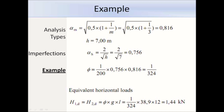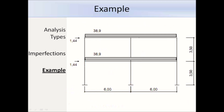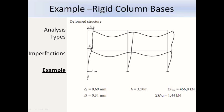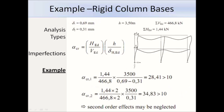We have worked out the EHFs as 1.44 kN and we can add those to the diagram. For the case of rigid column bases, the deflected shape is shown with deflections marked using a computer program. The storey height is 3.5 metres, the sum of vertical loads is 466.8 kN, and the sum of the EHFs is 1.44 kN. Using these values, alpha crit works out as 28.41 for the first storey and 34.83 for the second storey. Both values are larger than 10, so we know that second order effects may be neglected.